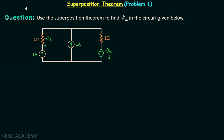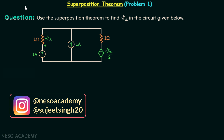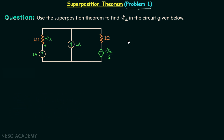In the previous lecture we had a discussion on the superposition theorem, where we saw what the superposition theorem is and how to use it to find the current through and voltage across any element in a given linear bilateral network. Now we are going to start our practice on the superposition theorem. In this lecture we are going to solve problem number 1, where we are required to find voltage Vx across the 1 ohm resistor using the superposition theorem.